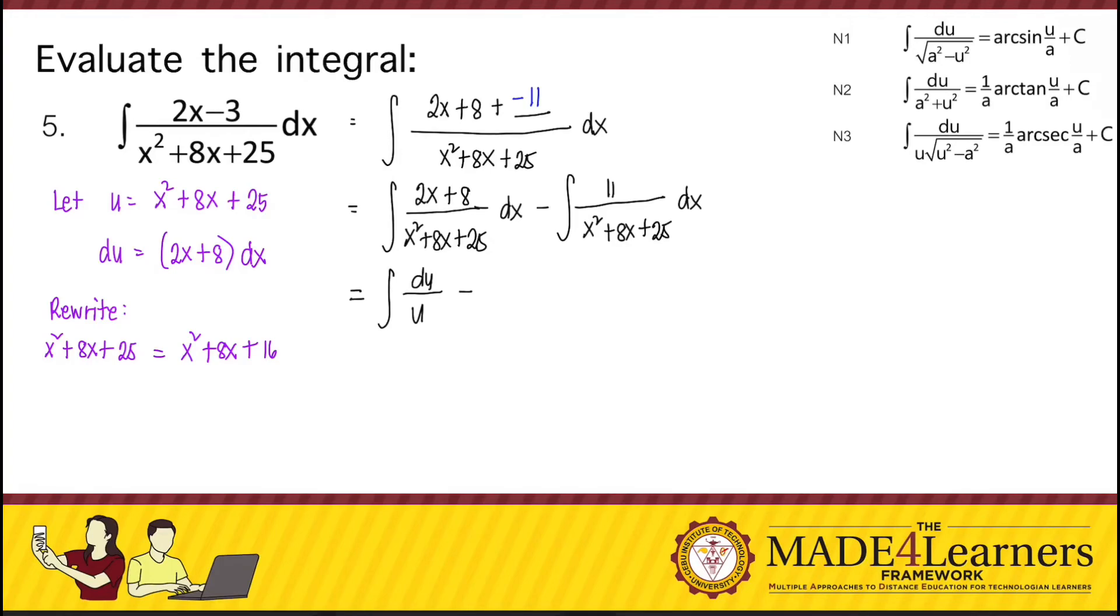So that's 16, but take note that it's 25 here, so there is still a missing 9. So plus 9. We are going to regroup it and then factor it out, so that's x plus 4 quantity squared plus 3 squared. This x plus 4 squared is our u squared and this 3 squared is our a squared.